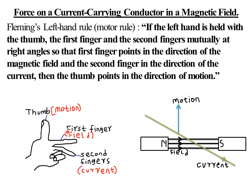An easier way to remember: first Finger = Field (F and F), second finger = Current (C and C), and thumb = Motion (M). Always use the left hand — if you apply the same rule with the right hand, you will obtain opposite results. Align the first finger along the direction of the field, the second finger along the direction of the current, and observe the direction the thumb points.